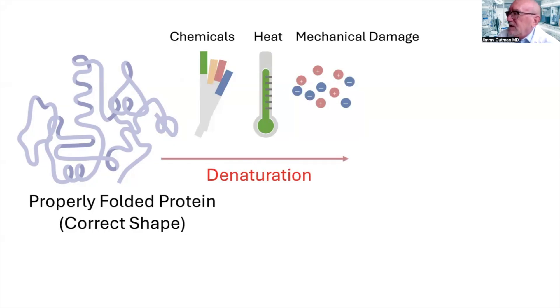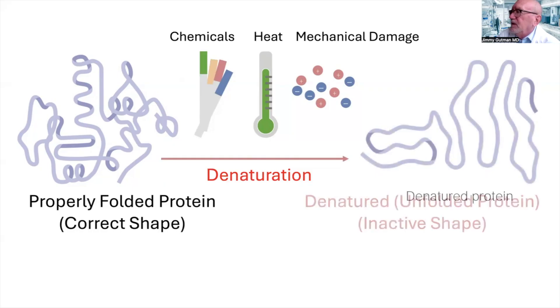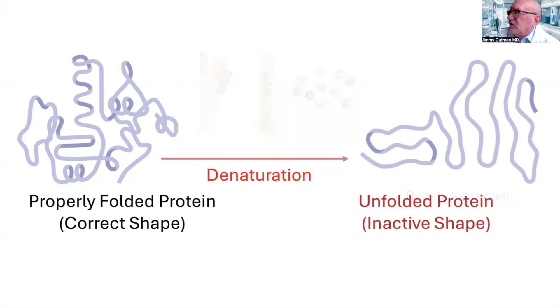The process of denaturization, you've heard this word before, and what denaturization does is that it unfolds the protein. It changes its shape. And because its three-dimensional shape is changed, the protein loses its biological activity. It won't do what it's supposed to do.